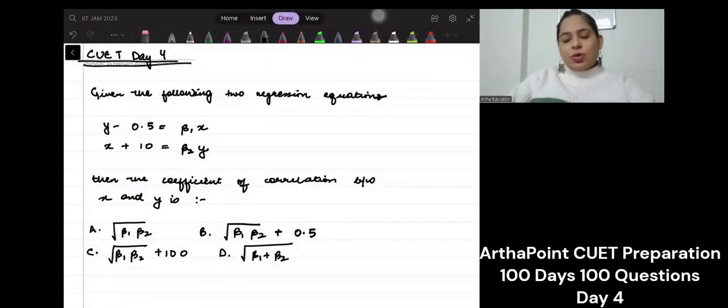Okay, hello everyone. Let's have a look at today's question. It says, given the following two regression equations, the correlation coefficient between x and y is.